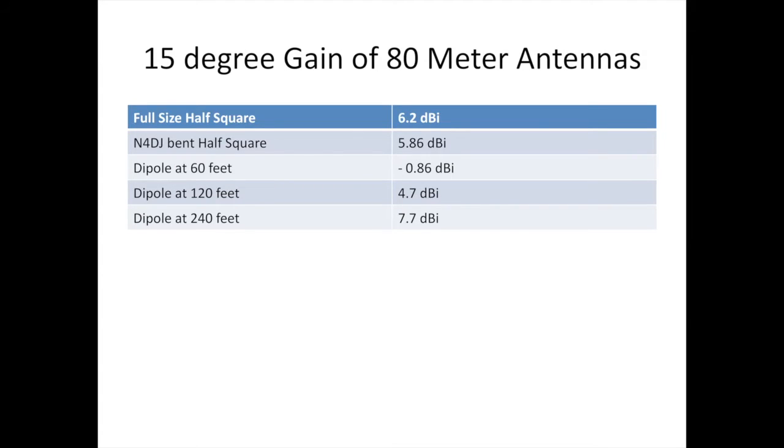We're looking at the 15 degree elevation gain of 80 meter antennas. A full size half square has a gain of about 6.2 dBi. The bent half square is 5.86. The dipole at 60 feet is negative. A dipole at 120 feet is 4.7 dBi. And a dipole at 240 feet is what it takes to beat the half square: 7.7 dBi gain.